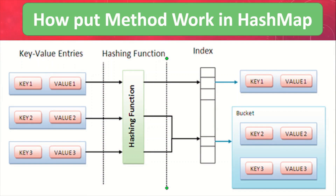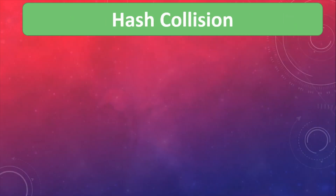Whenever you insert a new key-value pair using put method, HashMap doesn't blindly allocate a slot in the hash table. Instead it calls the hash function on the key and calculates its hash code value. HashMap has its own hash function to overcome poorly implemented hash code methods. After calculating the hash code, it calls the indexFor method, passing the hash code of the key and the length of the hash table. This method returns an index number in the hash table where that specific key-value pair will be stored.